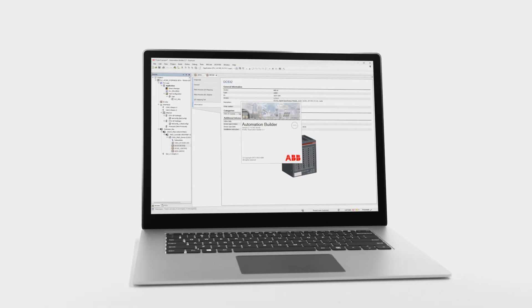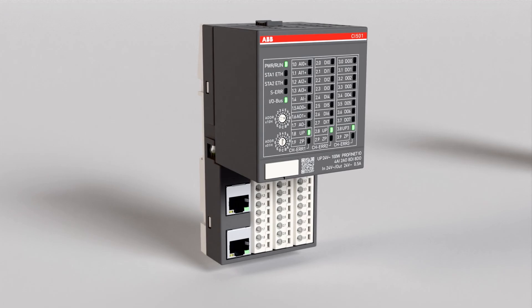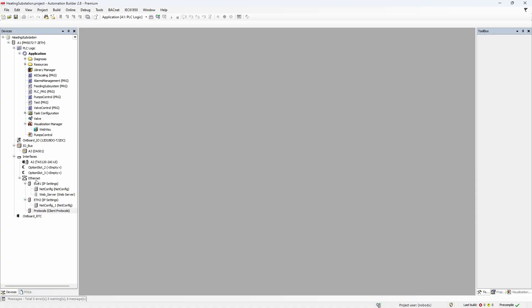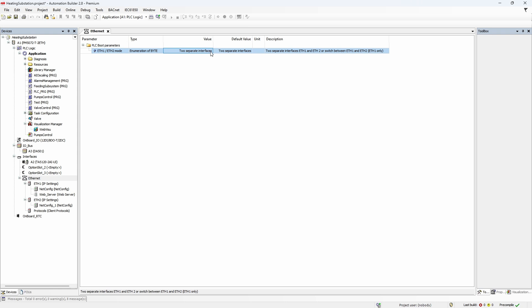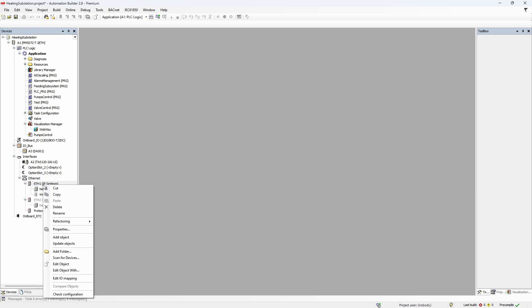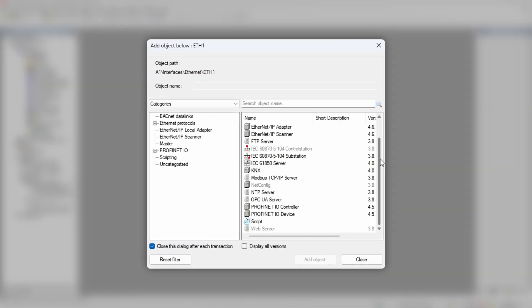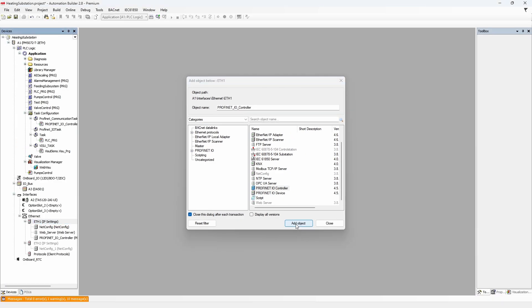First, since we are going to connect Automation Builder and CI501 remote I.O. station to the PLC at the same time, it is convenient to change embedded Ethernet ports to a switch mode rather than two separate ports. Next, right-click on the Ethernet port and add new object. You're looking for the PROFINET I.O. controller. Add object and close the window.